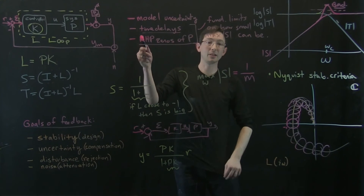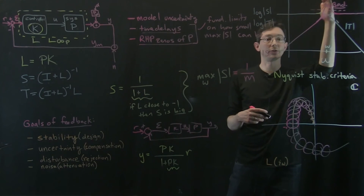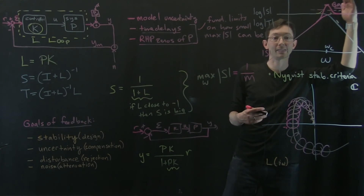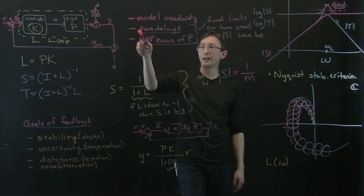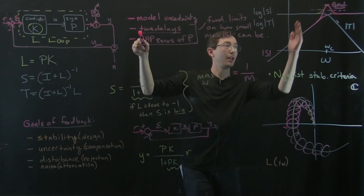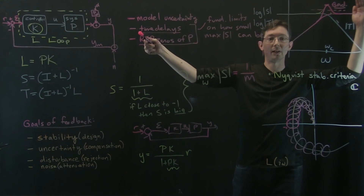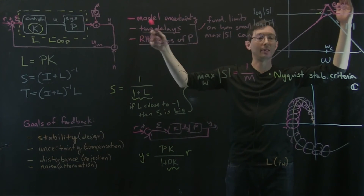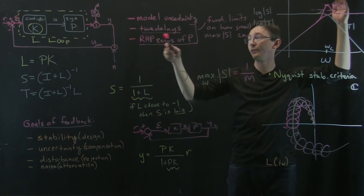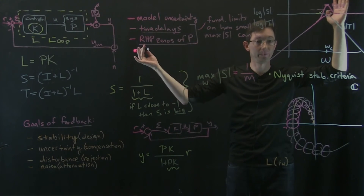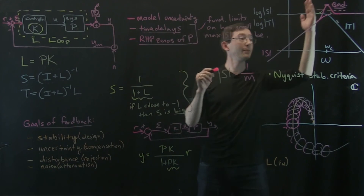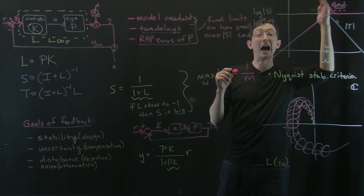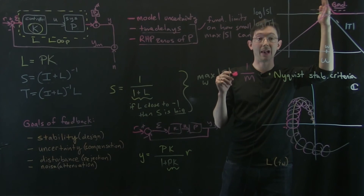If I have time delays and right half plane zeros and I try to control something really fast, my system is going to blow up. This makes a lot of sense: if I've got a one second time delay and I'm trying to control something at 500 Hz, there's no way I can do that. Time delays and right half plane zeros put fundamental limits on how high a bandwidth you can effectively and robustly track.